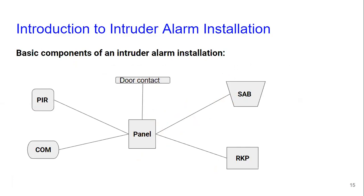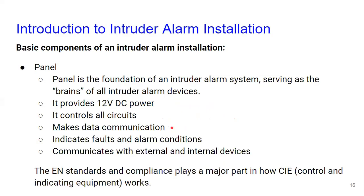There are different ways to wire — you can do bus network, and some systems like Risco give different wiring options. For a small domestic installation, you decide where the panel goes and run cable from every sensor to the panel in a star-type wiring. The panel provides power to all devices — power is centralized. It controls all circuits, makes data communication with devices like keypads and expanders, and indicates any faults via LEDs and LCDs.